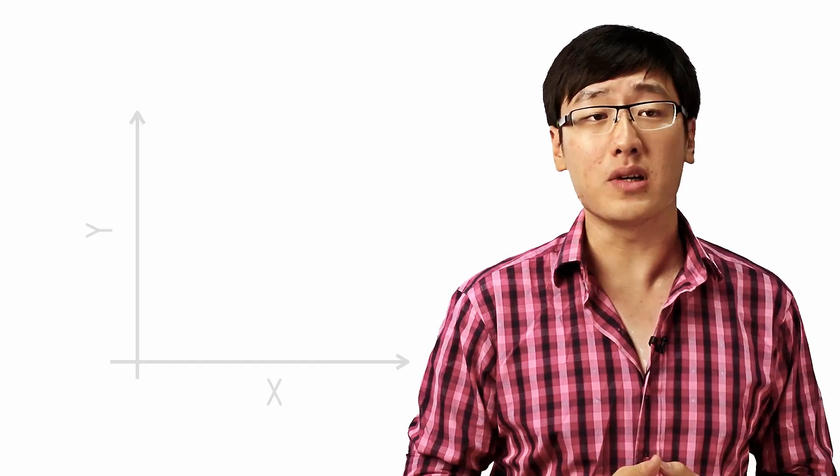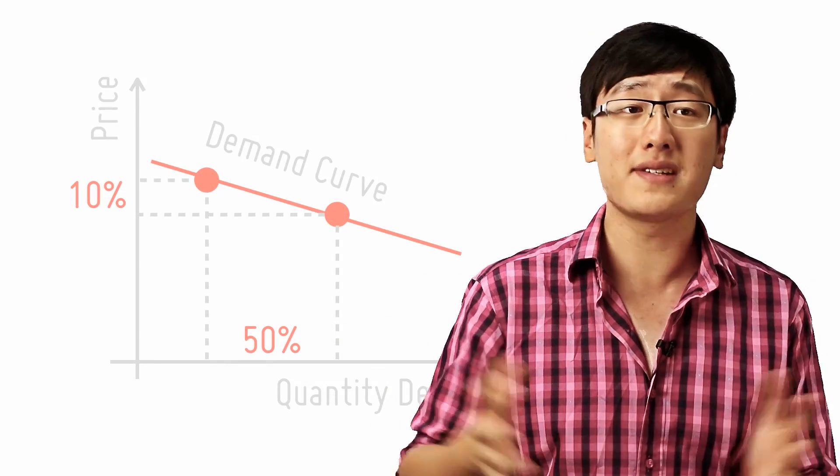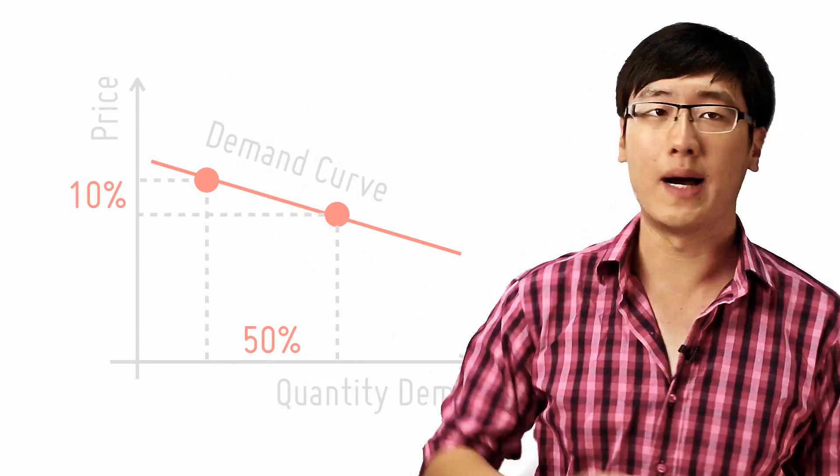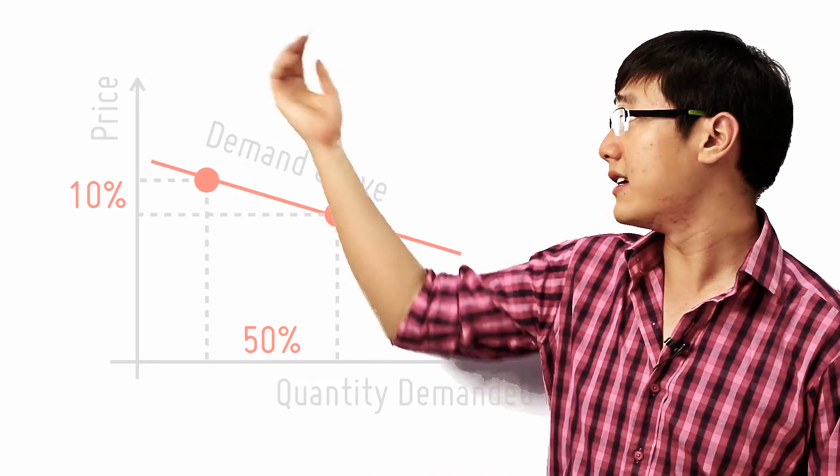It is that simple. So imagine we replace the Y and X axis with something that makes a little more sense. For example, Y axis now becomes price and X axis is now the quantity, and now we put in the demand curve.